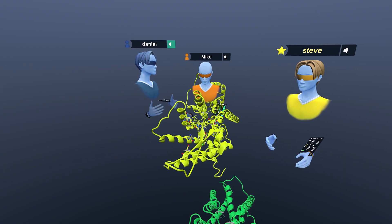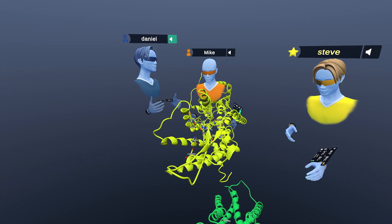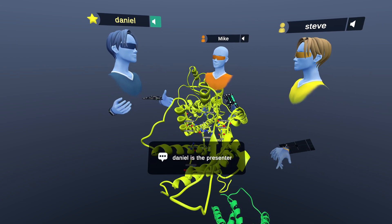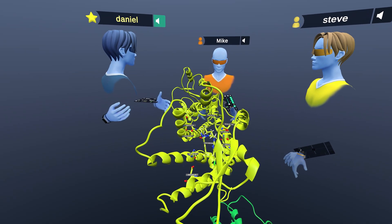GPCRs represent the largest family of druggable targets in the human genome. And actually, about a third of current FDA-approved drugs target GPCRs. That's how important they are.